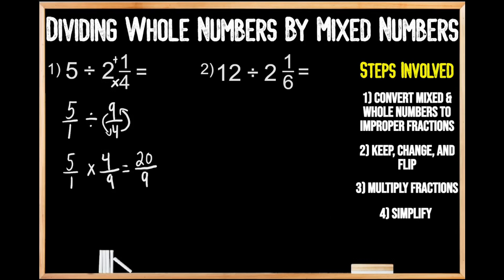But we do need to convert this improper fraction into a mixed number. We know this is an improper fraction because the numerator is greater than the denominator. So we're going to divide 20 by nine. Working through the division steps from left to right, we can't make a group of nine out of two, so we move on. How many groups of nine can we make out of 20? We can make two whole groups. We multiply two times nine to get 18, and when we subtract 18 from 20, we're left with two. So 20 divided by nine gives us two with a remainder of two.